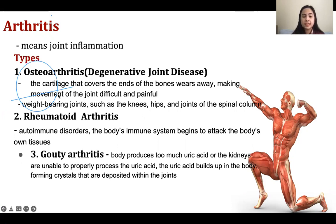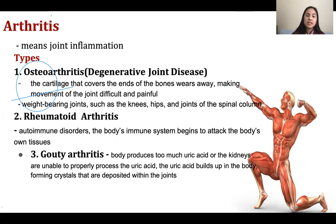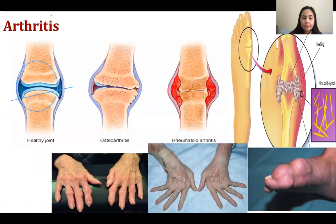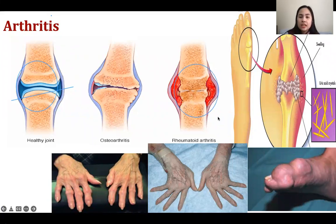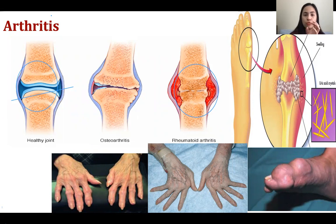Rheumatoid arthritis is caused by an autoimmune process — where your own cells attack your own cells. The white blood cells attack the tissues or the joint, causing it to become swollen and inflamed, resulting in arthritis. This is called rheumatoid arthritis.